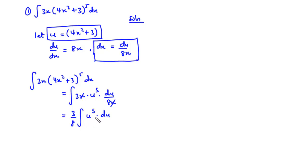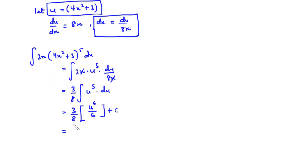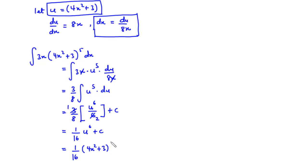We are left with u to the power 5, so let's integrate this. We still have 3/8 on the outside. We increase the exponent by 1 and divide by the new exponent, giving u to the power 6 divided by 6, plus the constant C. Simplifying 3/8 times 1/6 gives 1/16 times u to the power 6 plus C. Now substituting u back, since u equals 4x squared plus 3, we get (1/16)(4x squared plus 3) to the power 6 plus C. This is our final expression.